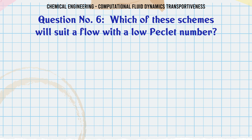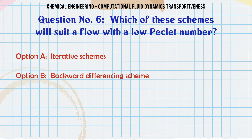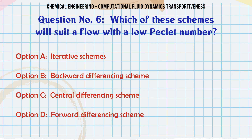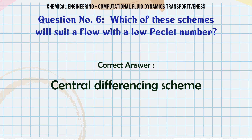Which of these schemes will suit a flow with a low Peclet number? A. Iterative schemes. B. Backward differencing scheme. C. Central differencing scheme. D. Forward differencing scheme. The correct answer is C, central differencing scheme.